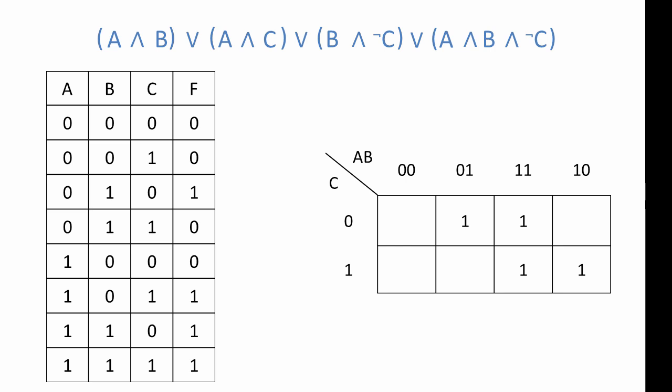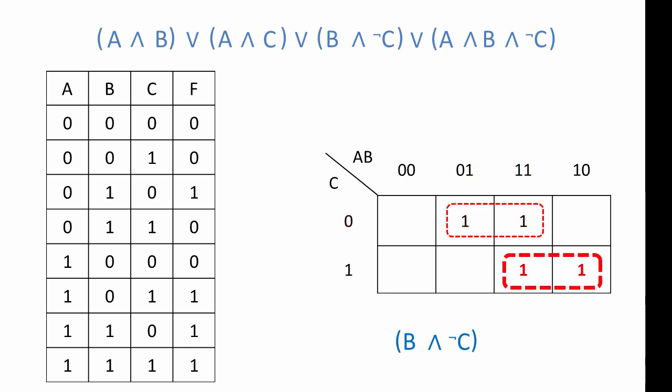Let's inspect the K-map and see what groupings we have. We've got two groups of ones. This first group of ones always corresponds to B equals one, and they also always correspond to C equals zero, so we have B AND NOT C. With the second group of ones, they always correspond to A equals one and also C equals one, so this group is A AND C. That gives us our final simplified expression: B AND NOT C OR A AND C.